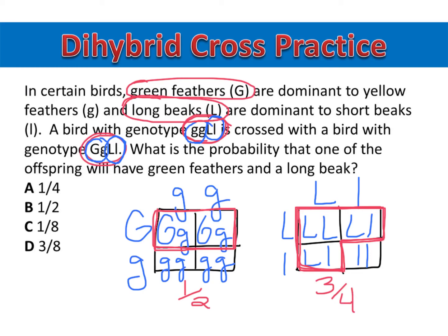Now I need to take the fraction that I got from each Punnett square and multiply them together. So multiplying fractions: first I'll multiply my numerators — 1 times 3 is 3. And then I'll multiply my denominators — 2 times 4 is 8. So the probability of one of the offspring having green feathers and a long beak is 3 out of 8.